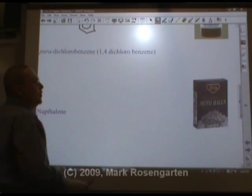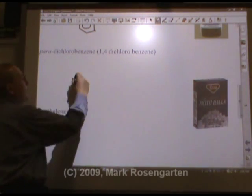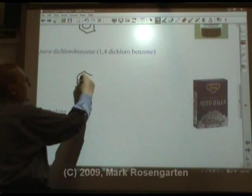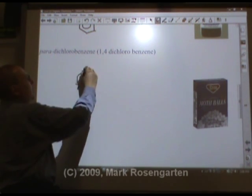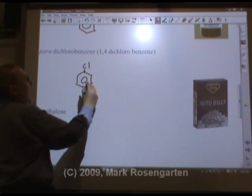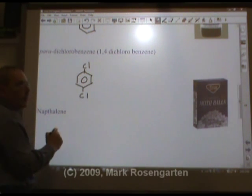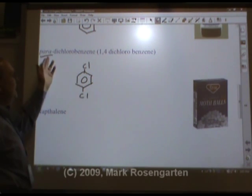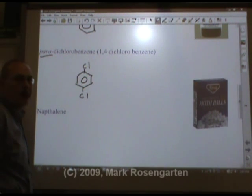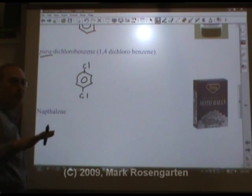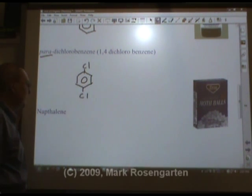Paradichlorobenzene is used as mothballs. It's benzene with chlorines at the one and four positions. Para means that the chlorines are on opposite ends of the benzene molecule. There's also ortho and meta, but that's for your organic chemistry course.